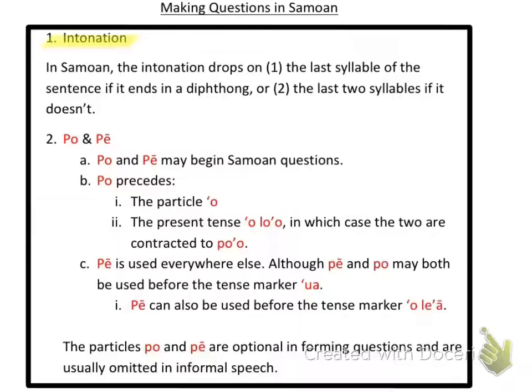In Samoan, the intonation drops on the last syllable of the sentence if it ends in a diphthong, or the last two syllables if it doesn't. A diphthong is a line above one of the vowels and it makes it have more emphasis on that vowel. If there is a diphthong at the very last syllable, then we drop our intonation there. If there's no diphthong in the last syllable, then we drop it on the last two syllables.